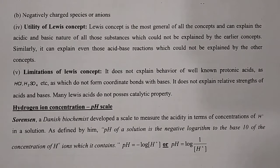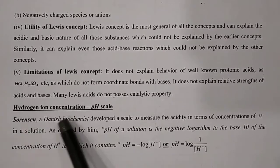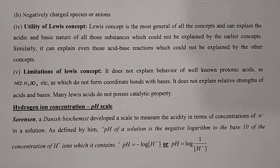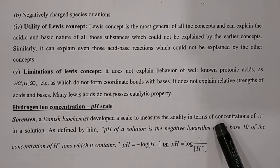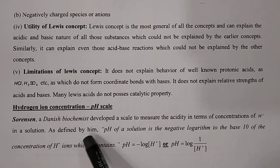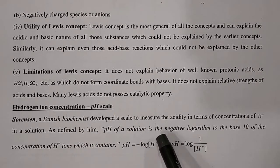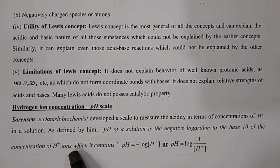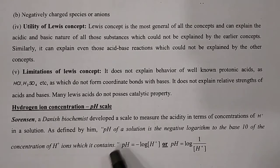Hydrogen ion concentration is entitled as pH. Sorensen, a Danish biochemist, developed a scale to measure acidity in terms of the concentration of H+ in a solution. As defined by him, pH of a solution is the negative logarithm to the base 10 of the concentration of H+ ion which it contains.